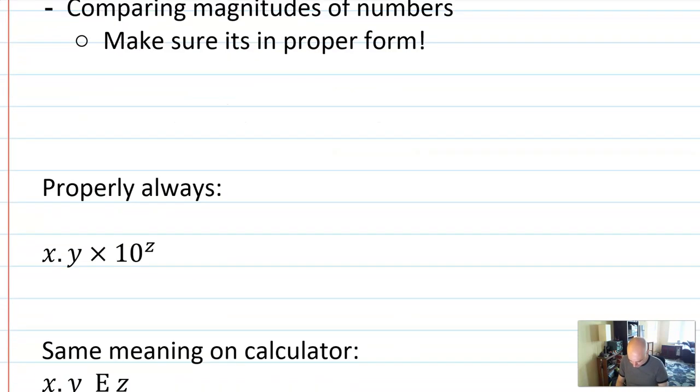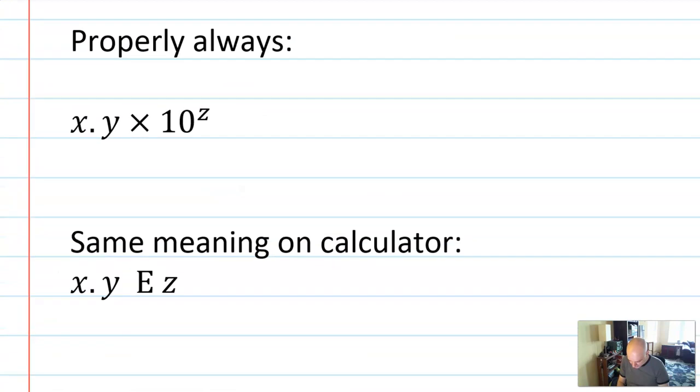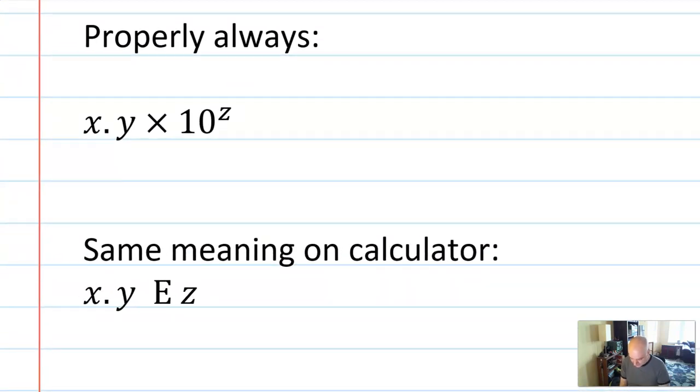What do you mean by proper form? Well, scientific notation is looking at a number as a power of 10. So, for example, it's always x point y times 10 to the z, using just general letters. Here's an example.